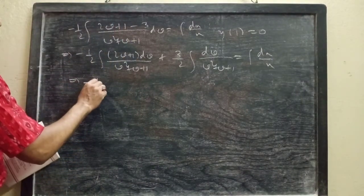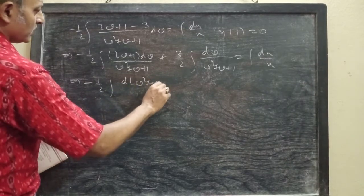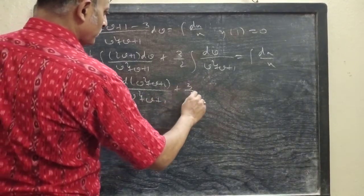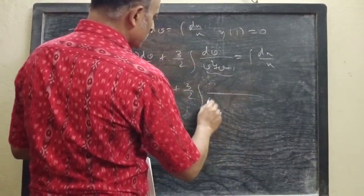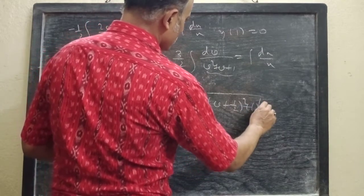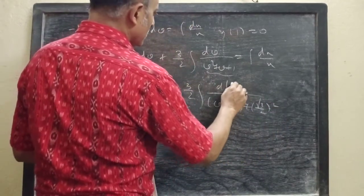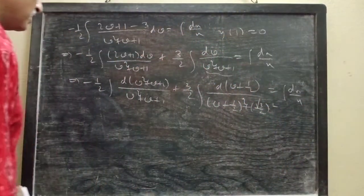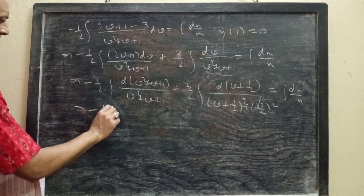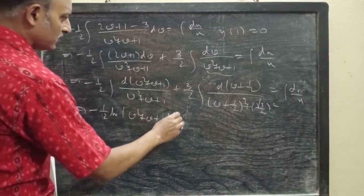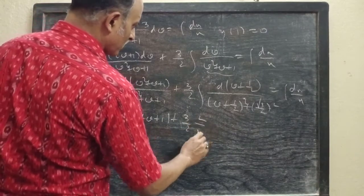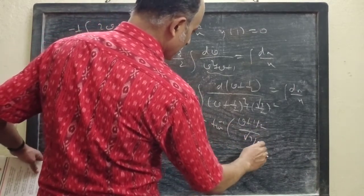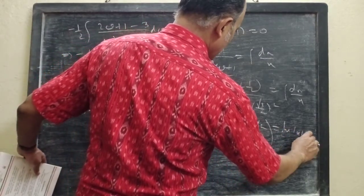Then writing minus half·integral of d(v² plus v plus 1) over (v² plus v plus 1), and expressing the denominator as (v plus 1/2)² plus (√3/2)². We get minus half·ln|v² plus v plus 1| plus (3/2)·(1/a)·tan⁻¹((v plus 1/2)/(√3/2)) equals ln|x| plus c.